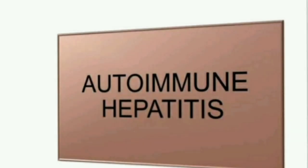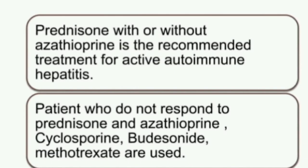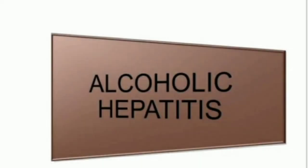Autoimmune Hepatitis is a chronic inflammation of the liver. It is characterized by the presence of autoantibodies and elevated serum IgG. The majority of patients are women. There is an autoimmune reaction against normal hepatocytes. Serological markers include antinuclear antibodies and anti-double-stranded DNA antibodies. Prednisone with azathioprine is the recommended treatment for active autoimmune hepatitis. Patients who do not respond may be treated with cyclosporine, budesonide, or mycophenolate.